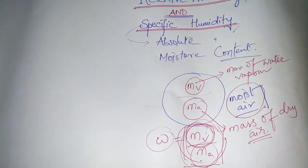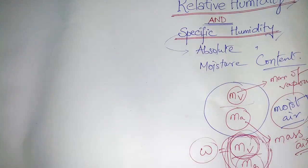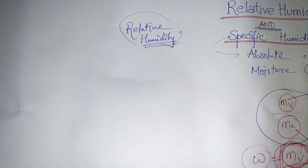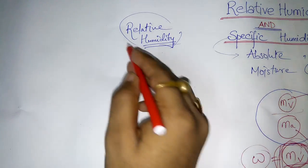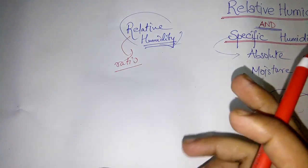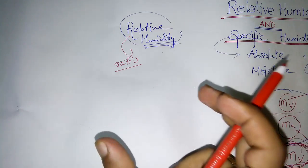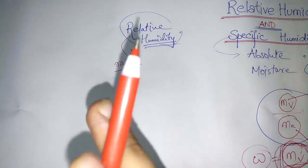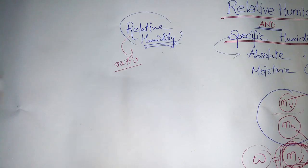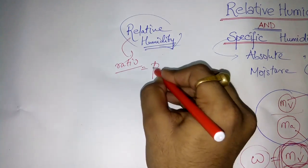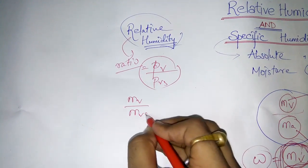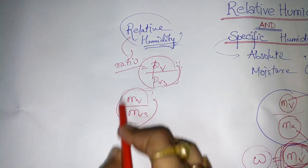Now let's understand relative humidity, so you can see the difference between relative humidity and specific humidity. Relative humidity is a ratio — it is the ratio of the amount of moisture present in air to the maximum amount of moisture that air can hold at that particular temperature. It can be defined as MV divided by MVS or PV divided by PVS.